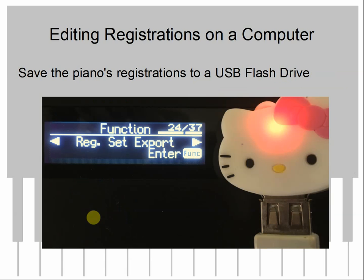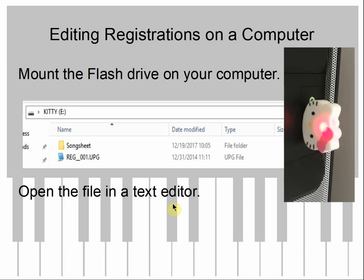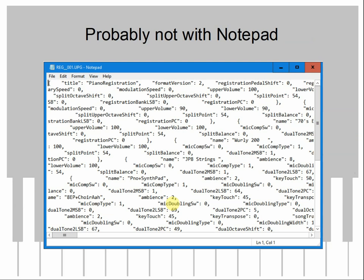The rest of the video is mostly about how to edit registrations on a computer. First, you save the piano's current registrations to a flash drive — you can use the defaults or anything already in. I find it painful to crawl behind the piano to plug in a USB stick, so I have a USB extender cable so I can plug the flash drive up front. Once you've got the registration file on the stick, put it in your computer and load it up in a text editor. On Windows, you won't want to use Notepad, because the file from the piano has Linux-style line endings using just newline or line feed, whereas Windows wants the old DOS-style carriage return line feed.